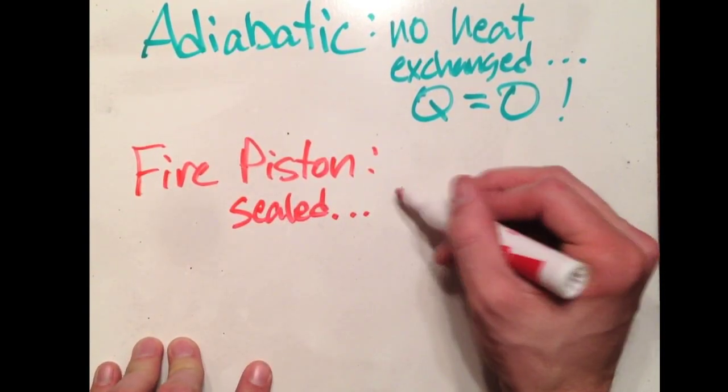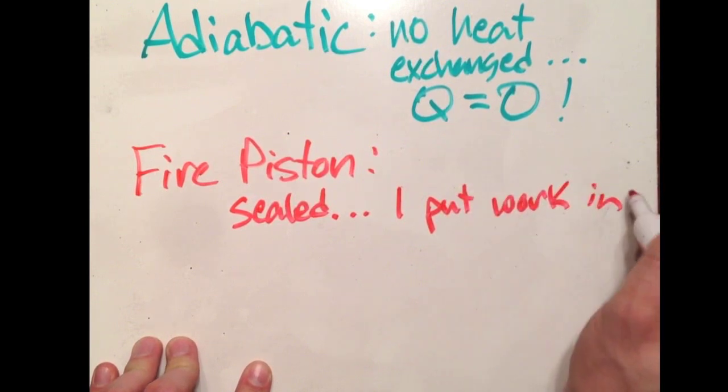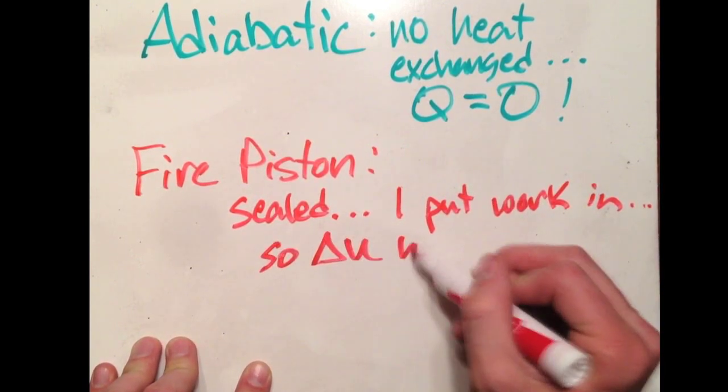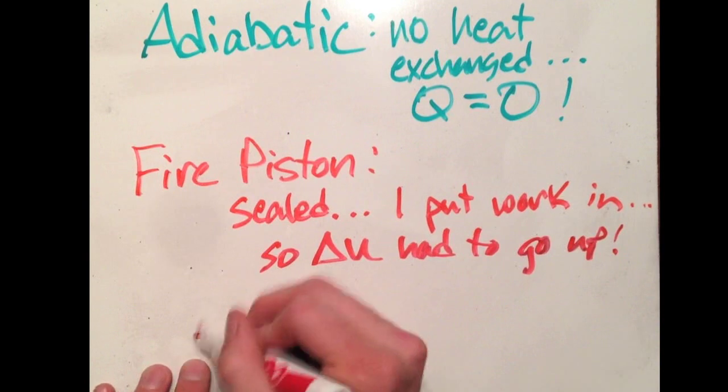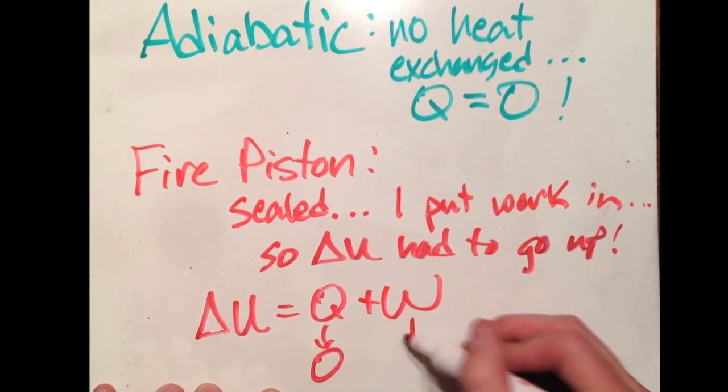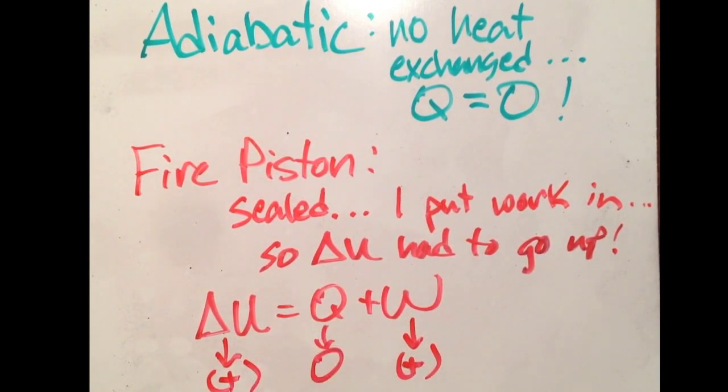Think back to the fire piston where I smashed it down and it caused the paper to ignite. It was sealed. I put work in by pushing the piston down, so delta U also had to go up. Think back to the first law, delta U equals Q plus W, Q is zero. Work in delta U need to be positive.